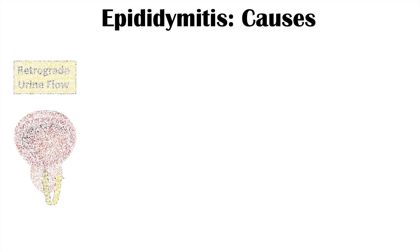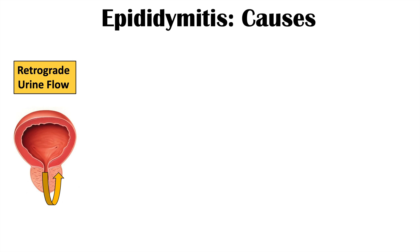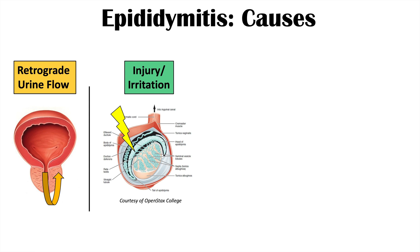What causes epididymitis? There are several categories of causes. One is retrograde urine flow, a very important cause, where some obstruction blocks urine flow from the bladder through the urethra. If there's such an obstruction, there can be retrograde flow of urine, which can eventually lead to inflammation of the epididymis.